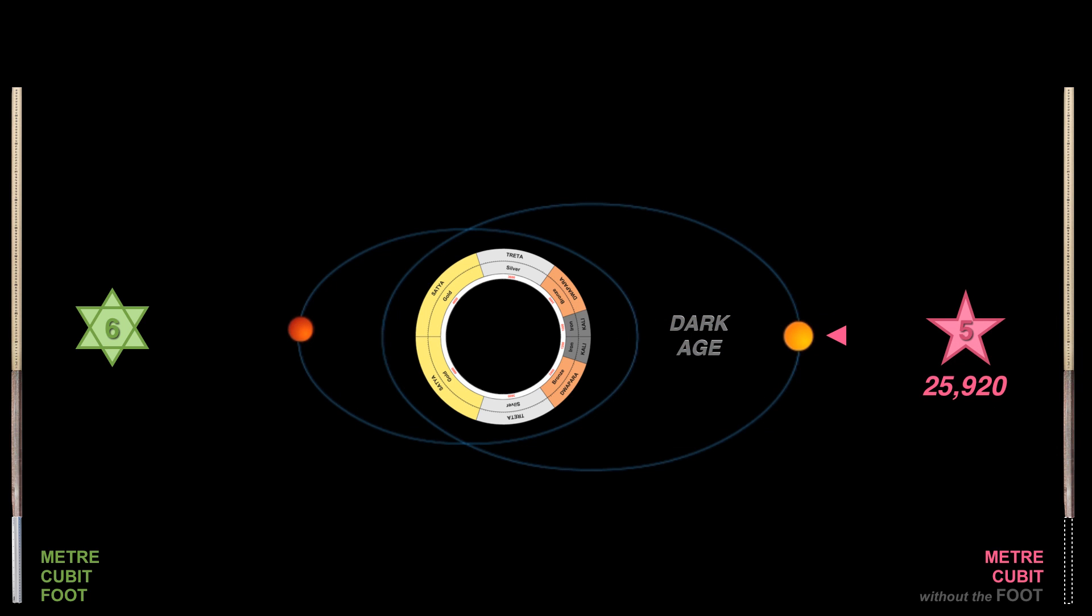Total great year would be 25,920. The point is there's a relationship between the meter cubit, which is 5, to the full foot cubit meter, which is 6.